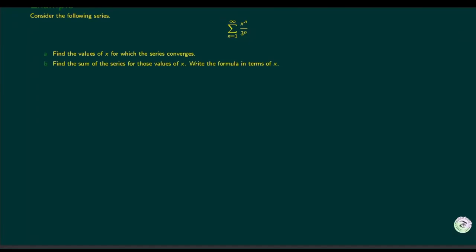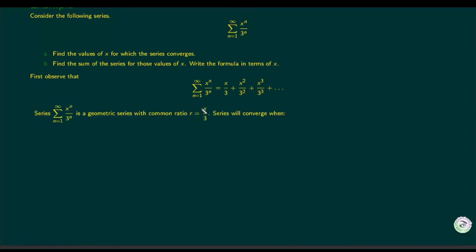Now let's look at another example where a series is given in terms of x, and we need to find the values of x for which it converges and the sum for those values. We rewrite the series in sigma form and recognize it as a geometric series with common ratio x/3, since dividing any term by the previous one gives x/3.